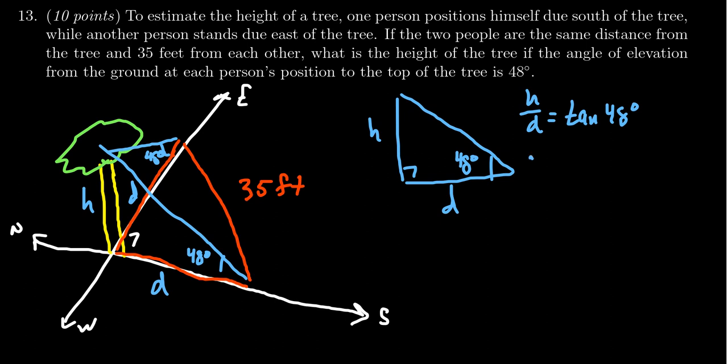Solving for H, we're going to get H is equal to D times tangent of 48 degrees. So if we knew the distance the two people walked away from the tree, we could find the height of the tree.